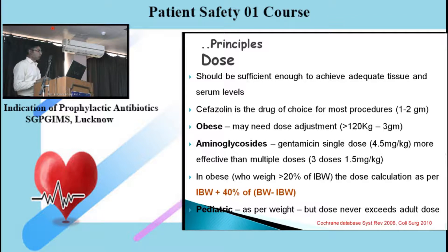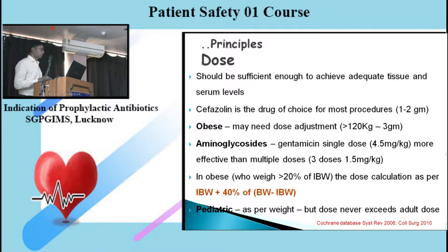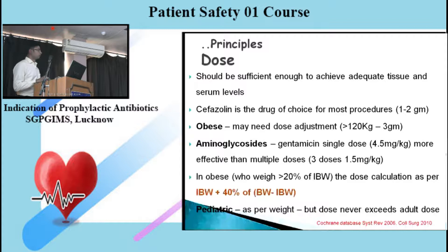For aminoglycosides such as gentamicin, a single dose is better than multiple small doses — for example, 4.5 mg/kg single dose is better than three doses of 1.5 mg/kg. In obese patients weighing more than 20% of their ideal body weight, the dose is calculated as: ideal body weight plus 40% of the difference between present body weight and ideal body weight. For pediatric patients above 1 year, principles are similar to adults, but the dose should never exceed the adult dose.